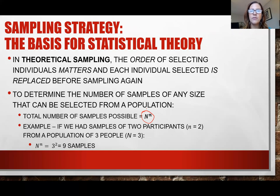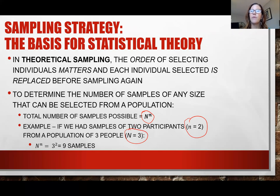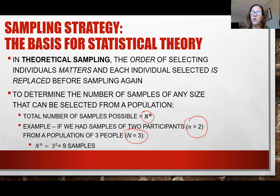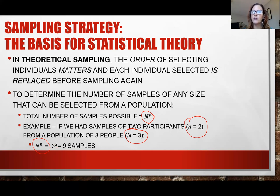If we have a sample of two participants and a population size of three — remember, lowercase n is sample size and uppercase N is population size — we use population size to the sample size as an exponent. So it's 3 to the 2nd power, which means 9 samples.